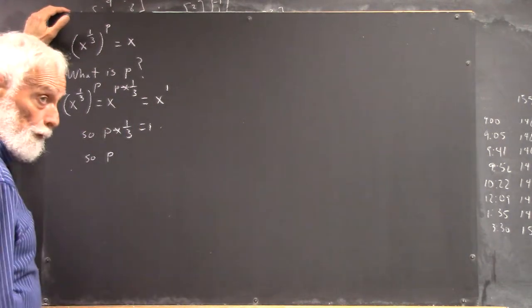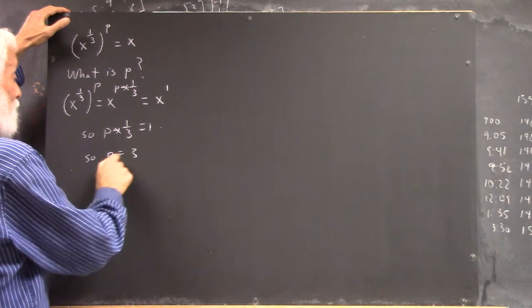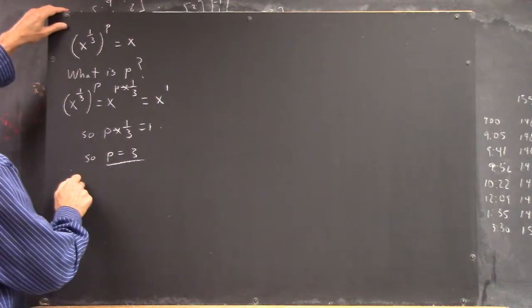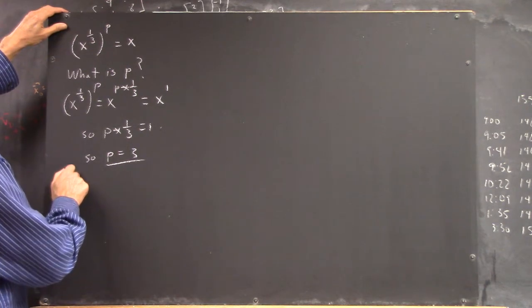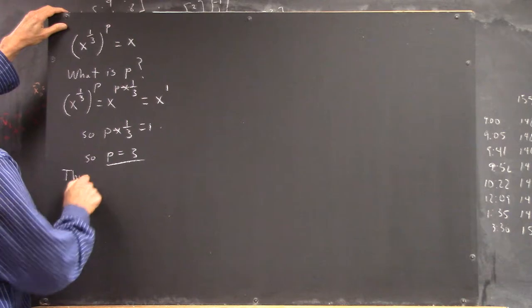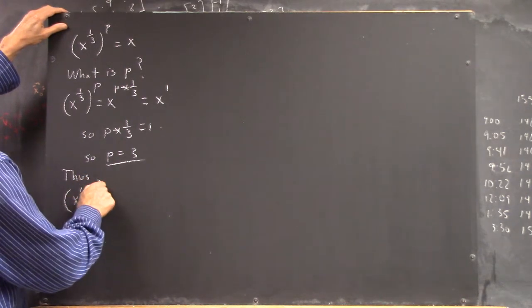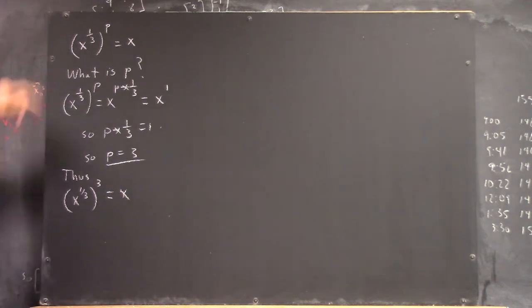And what do you multiply by 1/3 to get 1? So x to the 1/3 cubed equals x, right?